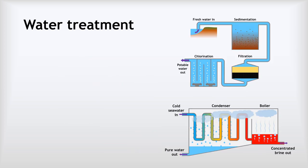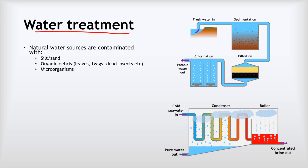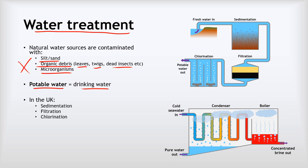The last part of this topic is water treatment. Water naturally is contaminated with things like silt or sand, organic debris like leaves, twigs, dead insects, and lots of microorganisms as well. We want to make it potable, which means drinking water, and all these things make water unpotable.